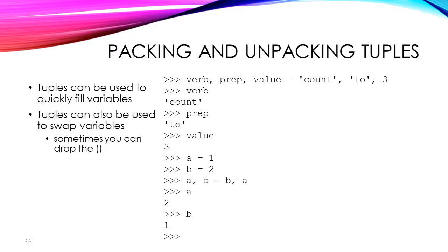Another feature of Python we're going to take advantage of is called packing and unpacking tuples. You can assign multiple variables in one assignment statement. For example, we have a tuple: verb, preposition, value — notice you can drop the parentheses. We assign it to: 'count', 'two', and integer 3. After typing this line, verb is assigned to 'count', prep is assigned to 'two', and value is assigned to 3. Another very useful thing is swapping variables — in Python you can just say a, b equals b, a, and it will swap the values.